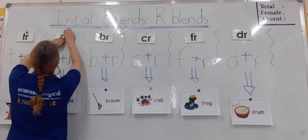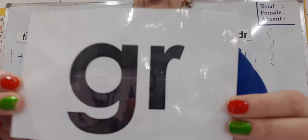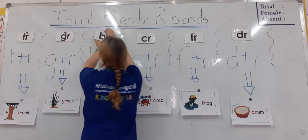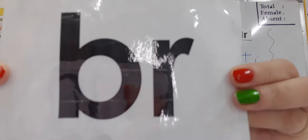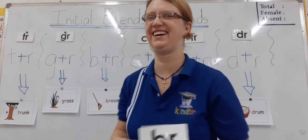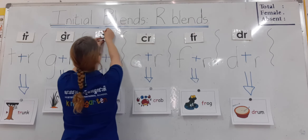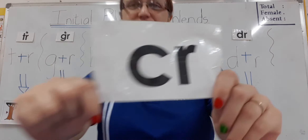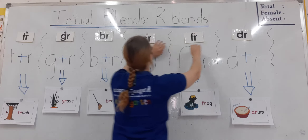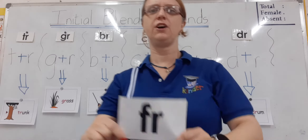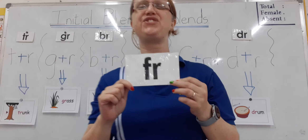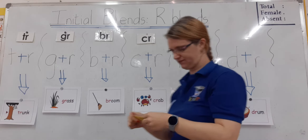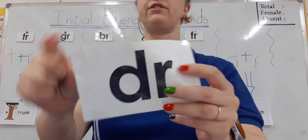Then we have GR, and then there is BR. And this one is CR. And here we have FR — it sounds difficult, but that's the F sound. And the last one we're going to look at is DR.